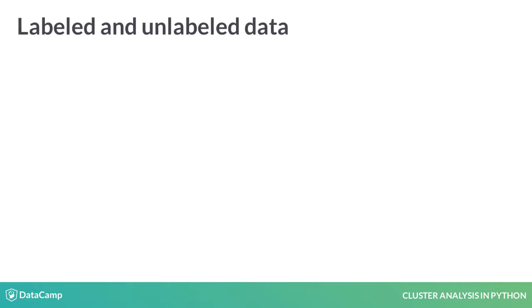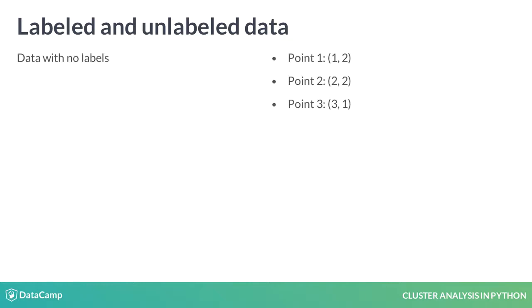Before we define unsupervised learning, let us try to understand the terms labeled and unlabeled data. Imagine you have a list of points with x and y coordinates. If only the coordinates of the points are available and there is no other characteristic available to distinguish the data points, it is called unlabeled data.